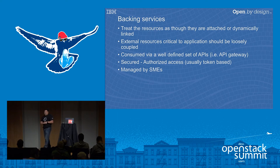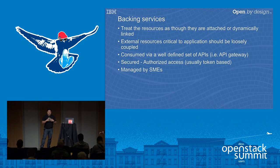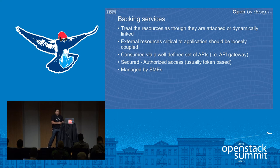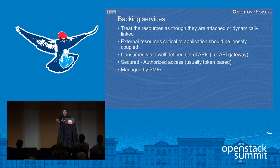Backend services are really the key to enriching your microservices application. Backend services should be treated as a decoupled state — as a developer you should have confidence that services are available when you need them, and that they're dynamically linked into your application. All the app logic should treat them as a dynamic bind, consumed via well-defined APIs in a secure manner, typically wrapped as an application token or service token. As a developer, you shouldn't have to worry about how they're deployed or managed, because these services are typically managed by subject matter experts.